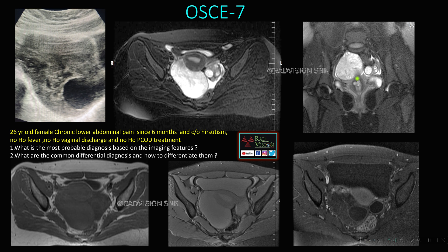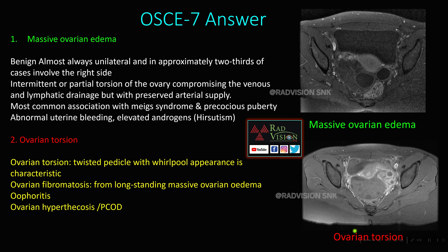The follicles are hyperintense on T2 with no T1 hyperintense areas suggesting hemorrhage, and no blooming on GRE. On IV contrast there is peripheral enhancement around the ovary and peripheral enhancement of the follicles. This is not a case of torsion but mimics torsion. The diagnosis is massive ovarian edema — an entity that is mostly benign, almost always unilateral, and in approximately two-thirds of cases involves the right side. It represents intermittent or partial torsion of the ovary compromising venous and lymphatic drainage but with preserved arterial supply — hence the enhancement, differentiating it from ovarian torsion.